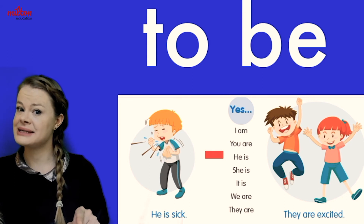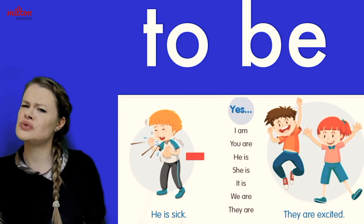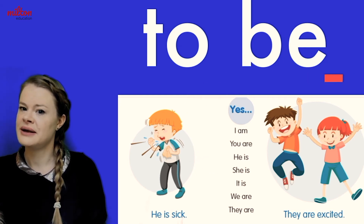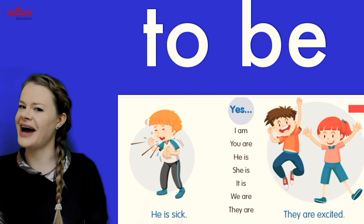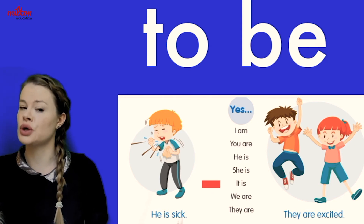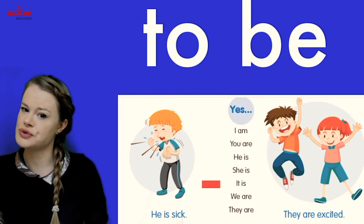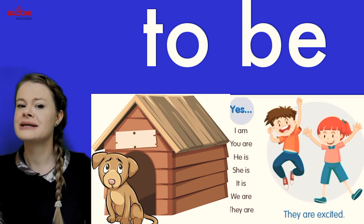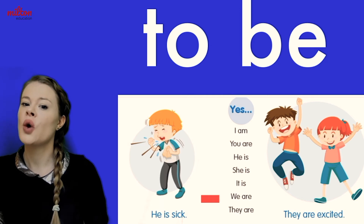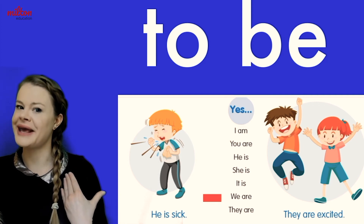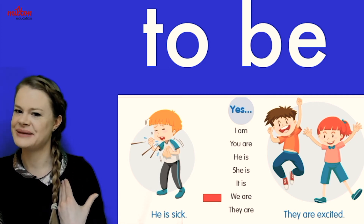Let's practice together. I am happy. You are happy, I hope! He is — look, he is sick. She is excited. We use 'it' when we want to talk about objects or animals, so I can say my dog is sad — it is sad.